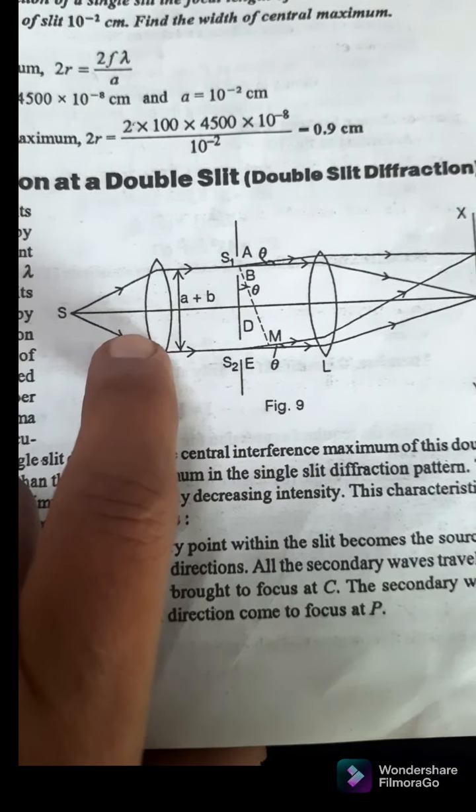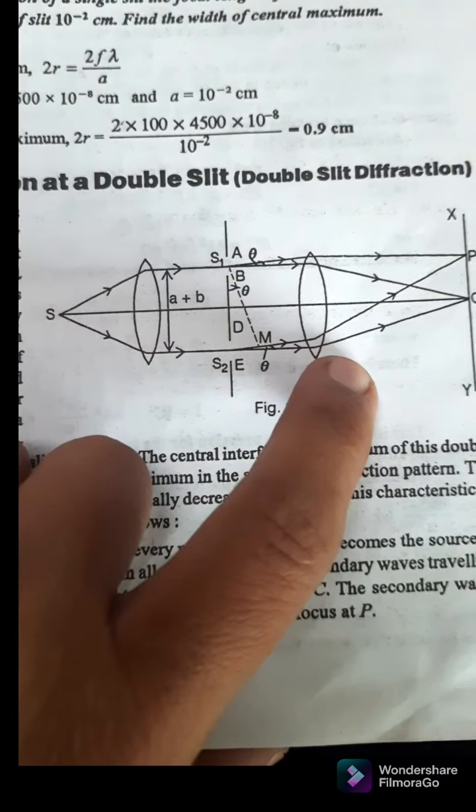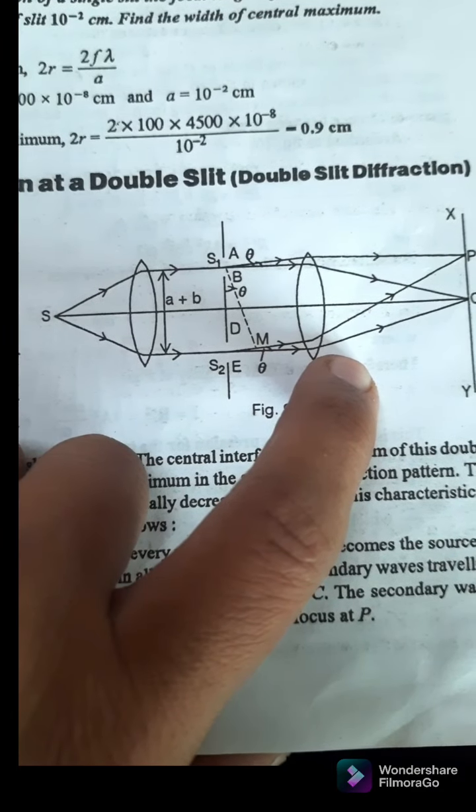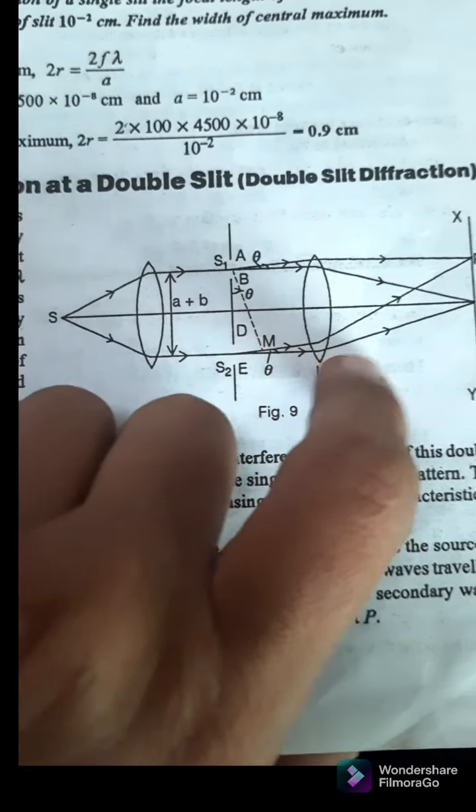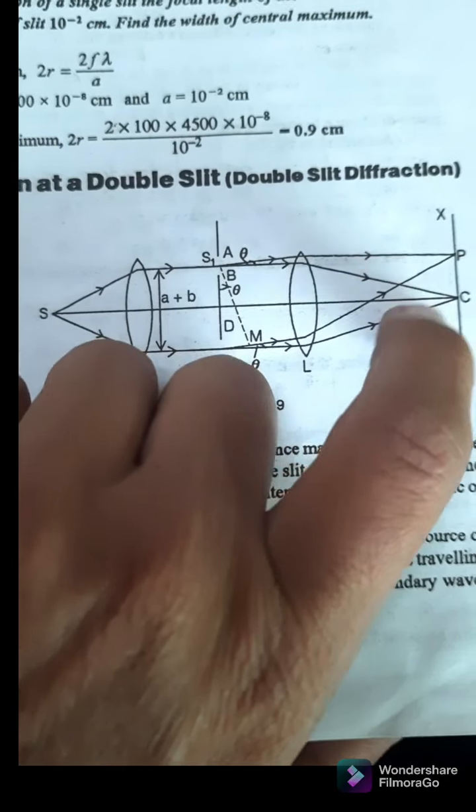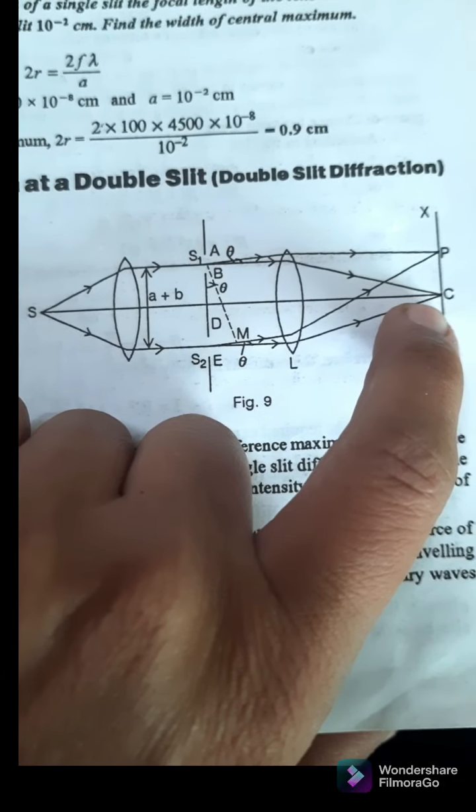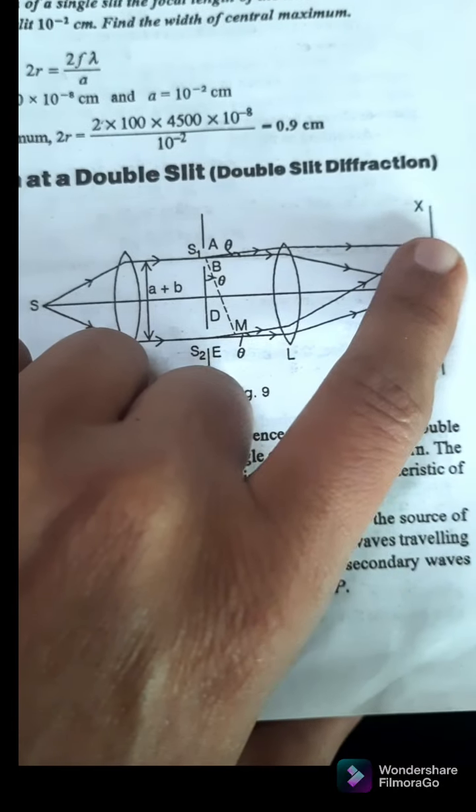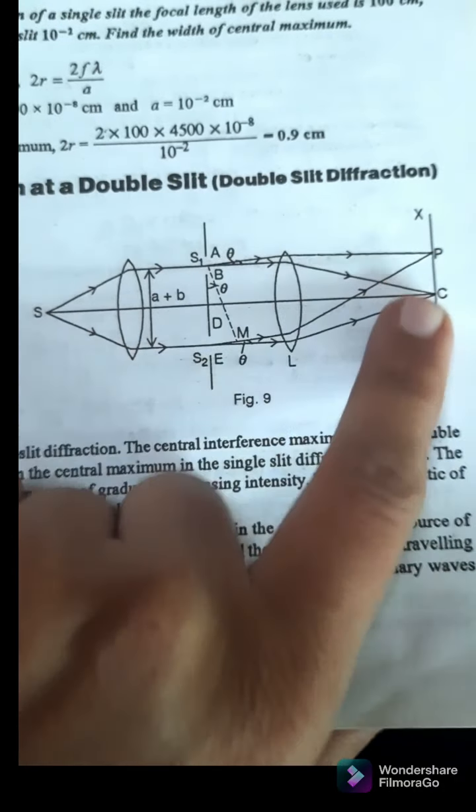The light is focused by another lens and we obtain the diffraction pattern at C. At the center we obtain the principal maxima.